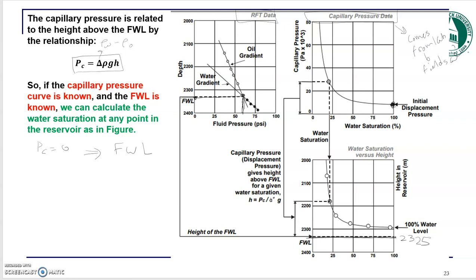Then you go to your capillary pressure curve and read it point by point. Starting at one point, you read the capillary pressure value — let's say it's 30 kilopascals at that point. So capillary pressure equals 30 kPa there.